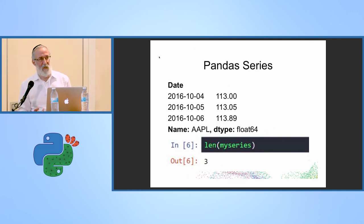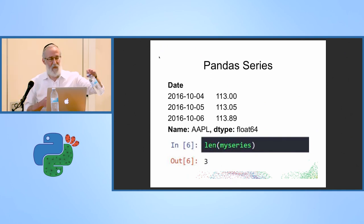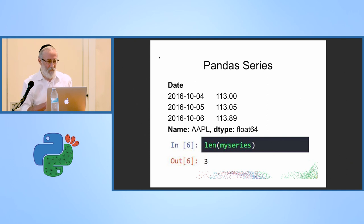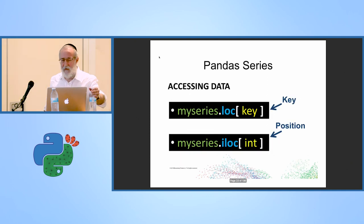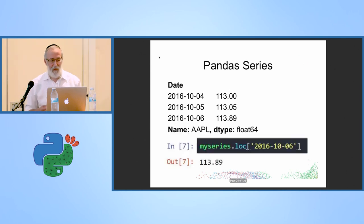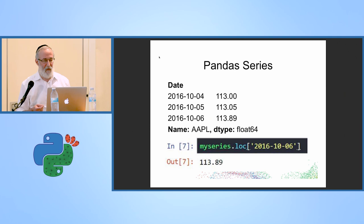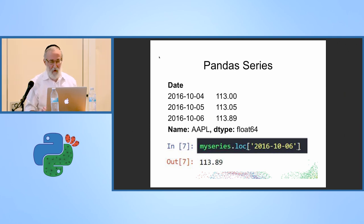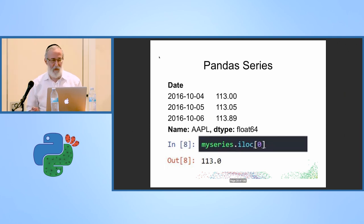What can you do with a series? You can take the length to see how much data you have. You can access the data either by key or by position. Here's an example of accessing data by key: you put in a certain date and you get back the data for that date, or you can access it by position.